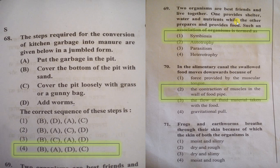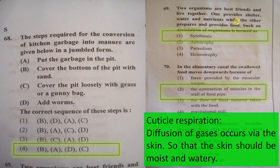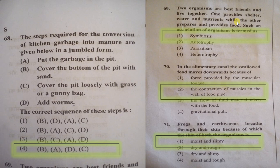The next question asks why frogs and earthworms breathe through their skin. This is called cuticular respiration. Diffusion of gases occurs via the skin, so the skin must remain moist and slimy. Therefore the answer is that their skin must be moist and slimy.